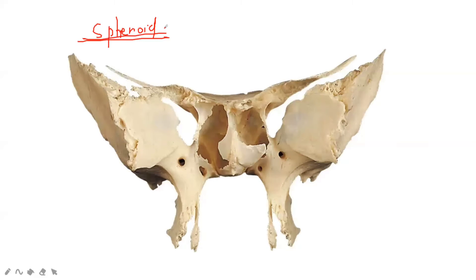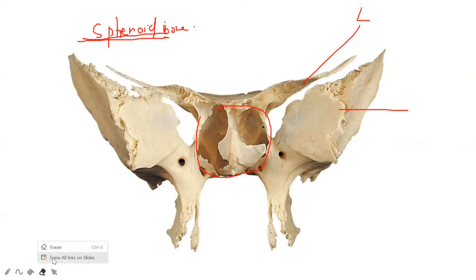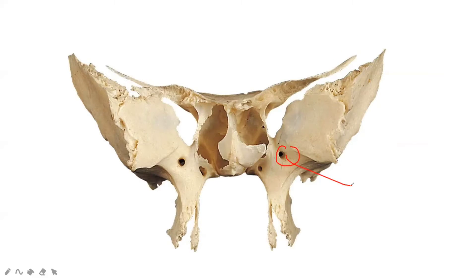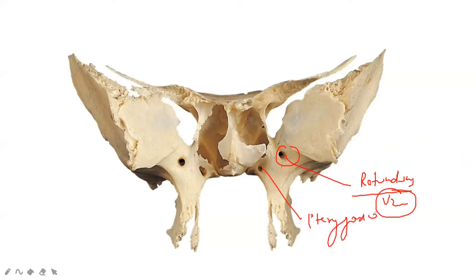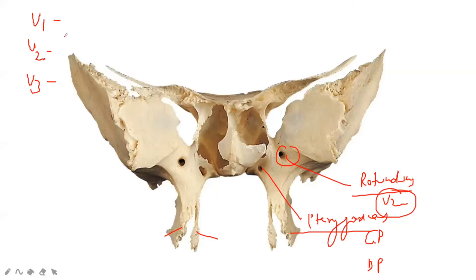This is a sphenoid bone. The upper flat one is the lesser wing of sphenoid, the rest is the greater wing of sphenoid, and the body of sphenoid. There are two foramina here: this foramen is the foramen rotundum — from rotundum, the second division of trigeminal (V2) passes. This is the pterygoid canal, and from it passes the greater petrosal nerve, deep petrosal nerve, and artery to the pterygoid canal. There is also the lateral pterygoid plate and the middle pterygoid plate. For V1, V2 and V3: remember the mnemonic SFO — V1 from the superior orbital fissure, V2 from rotundum, and V3 from ovale.